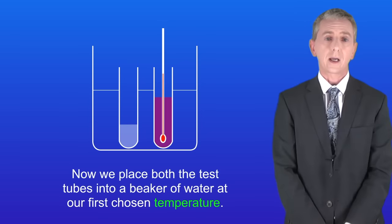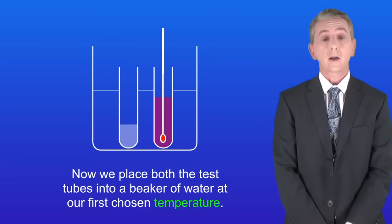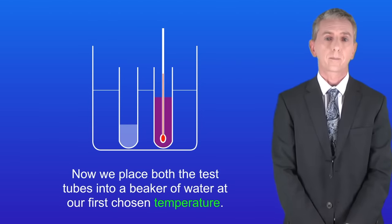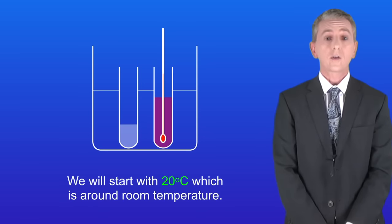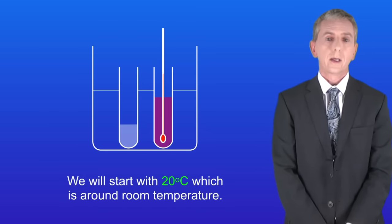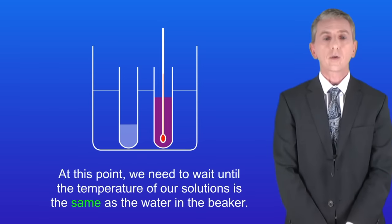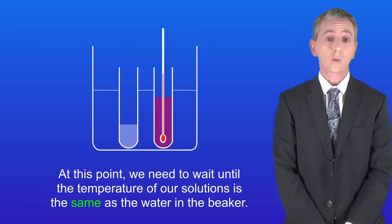We place both test tubes into a beaker of water at our first chosen temperature. We'll start with 20°C, which is around room temperature. At this point, we need to wait until the temperature of our solutions is the same as the water in the beaker.